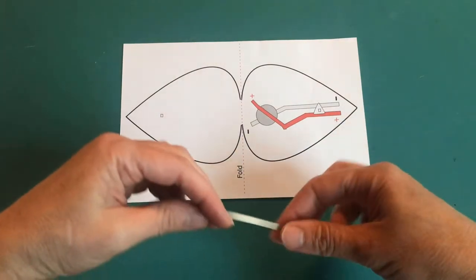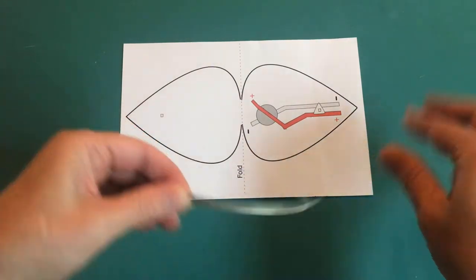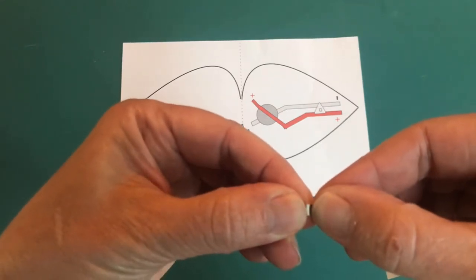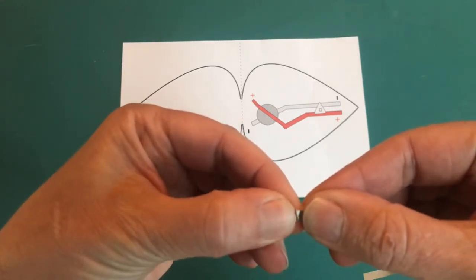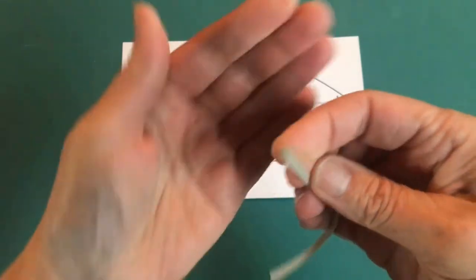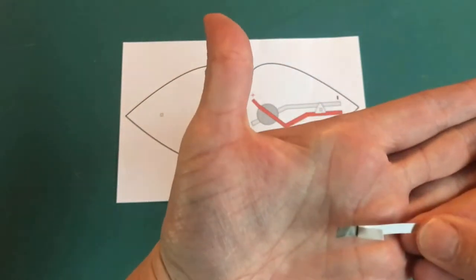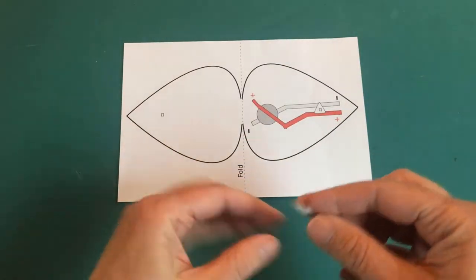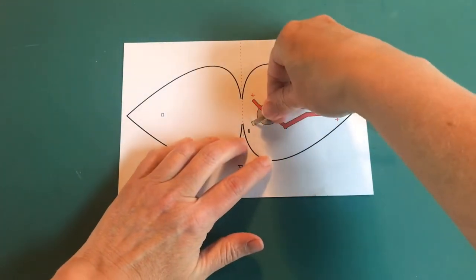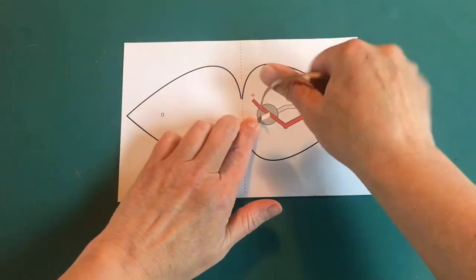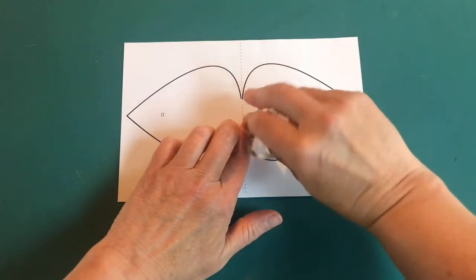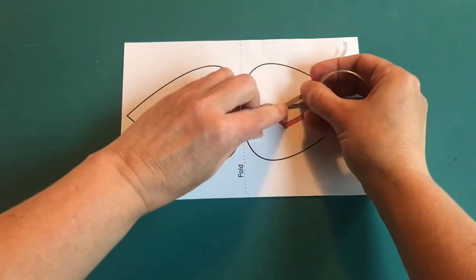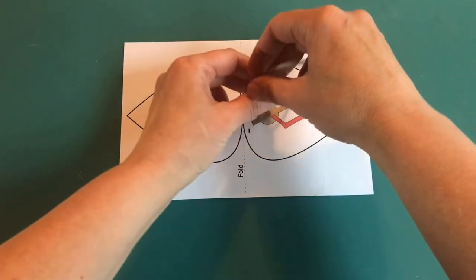Place your template on the table in front of you with the picture of the circuit positioned to your right. Use your fingernail to remove some of the protective backing off of the conductive fabric tape. You're going to be applying the sticky part to the template. We're going to start with the negative, the little minus sign.